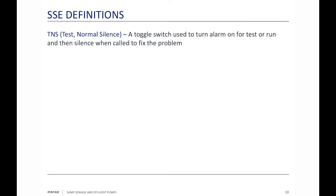TNS is a similar double-throw toggle switch with three settings. Test means you're checking if the alarm system works. Normal means the float determines when the alarm turns on and off. S means you're at the job site and the noise is so loud you can't stand it — you flip to S and that silences the audio part of the alarm. The visual indicator (red or amber light) still works, but the horn is turned off.